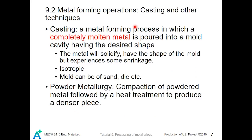There are other metal forming operations, such as casting. Casting is when a metal or alloy is completely melted and the molten metal is poured into a mold cavity that has the desired shape for the final piece. After solidification of the liquid metal or alloy, it will take the shape of the mold, though there is some shrinkage of the piece. The resulting workpiece is isotropic, and the mold can be made of sand, die, etc.